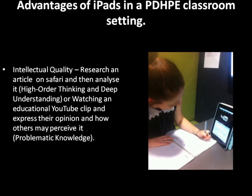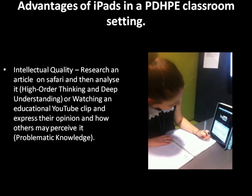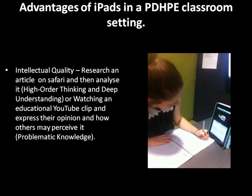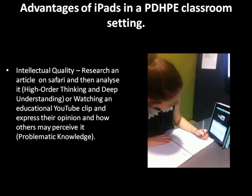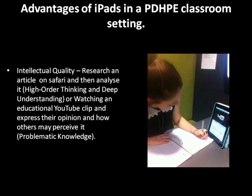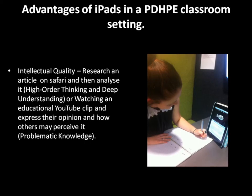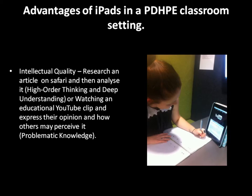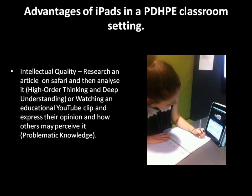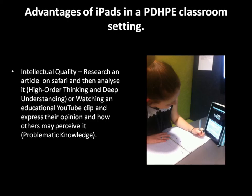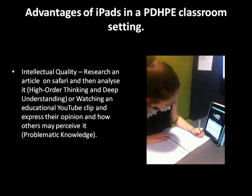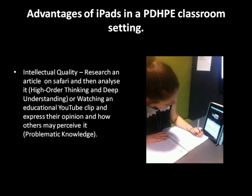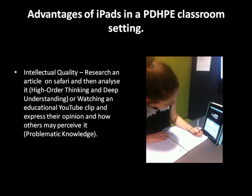Dimension 1 is intellectual quality. Within this dimension, students are required to display higher order thinking, deep understanding and problematic knowledge. Students are able to complete the requirements using iPads in a PDHP setting by researching strand or topic specific articles, which they will then analyse the content and present their findings to the class. Another way for students to show intellectual quality would be by watching a teacher-specified YouTube clip, then write a paragraph explaining how they perceive the message and how others may too. The clip could be about sense of self or support systems, which relates to the syllabus.